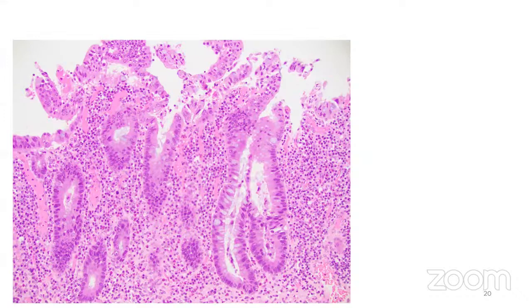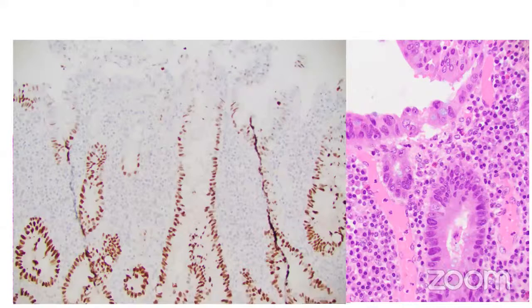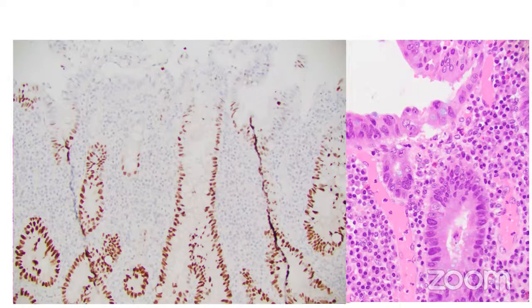I recently had a completion proctectomy case with mostly reactive changes, but on the surface I noticed loss of nuclear polarity. The patient had a history of multifocal low-grade dysplasia. On high power, the nuclei were getting larger and losing their polarity, apart from nuclear pleomorphism. I performed P53 immunostain. P53 positivity in this context means homogenous, strong to moderate staining — diffuse throughout the crypt — to be supportive of a dysplasia diagnosis. The P53 staining supported the diagnosis of high-grade dysplasia in this case.